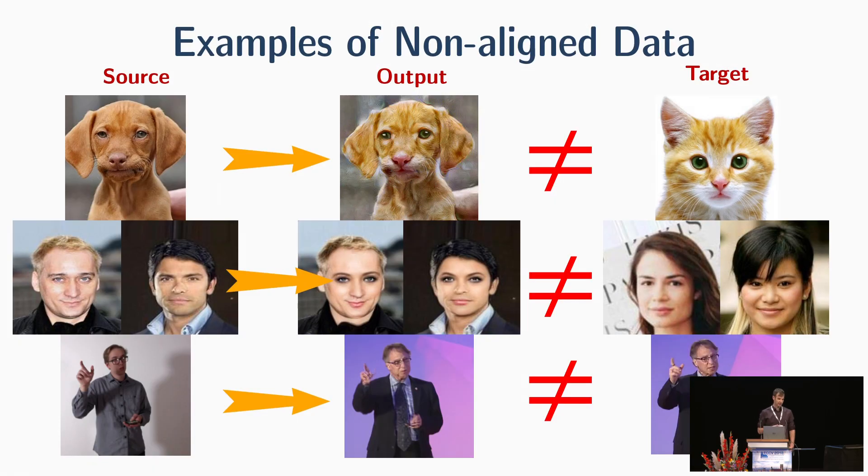Non-aligned data exists everywhere. For example, in style transfer, when the style and content images are not aligned. Or in domain transfer, such as gender change. Or in person-to-person translation, as shown in the bottom.